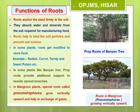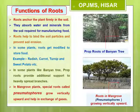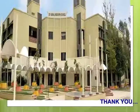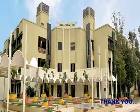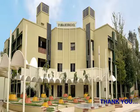Prop roots get fixed to the soil and act like pillars to provide additional support to the heavy spreading branches of the banyan tree. Mangrove plants grow in salt lakes and marshy areas where soil contains very little air. These plants develop special roots which come out of the soil, known as pneumatophores or breathing roots. These roots grow vertically upward from the underground roots, come out of the water and marsh, and help in the exchange of gases. That is all for today; in the next lecture we will study about the shoot system.